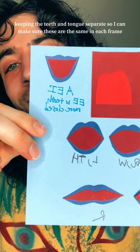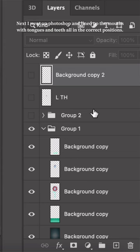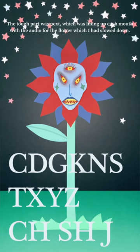I then took photos of these props. Next I went on Photoshop and lined up the mouths with tongues and teeth all in the correct position. The tough part was next, which was lining up each mouth with the audio for the flower, which I had slowed down.